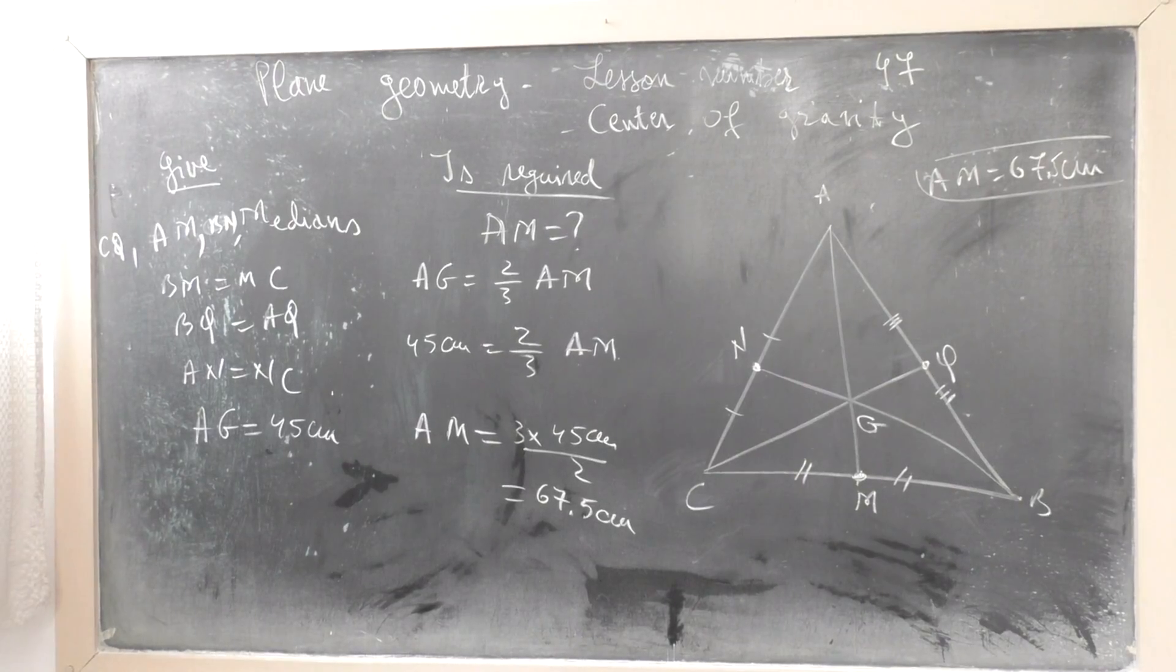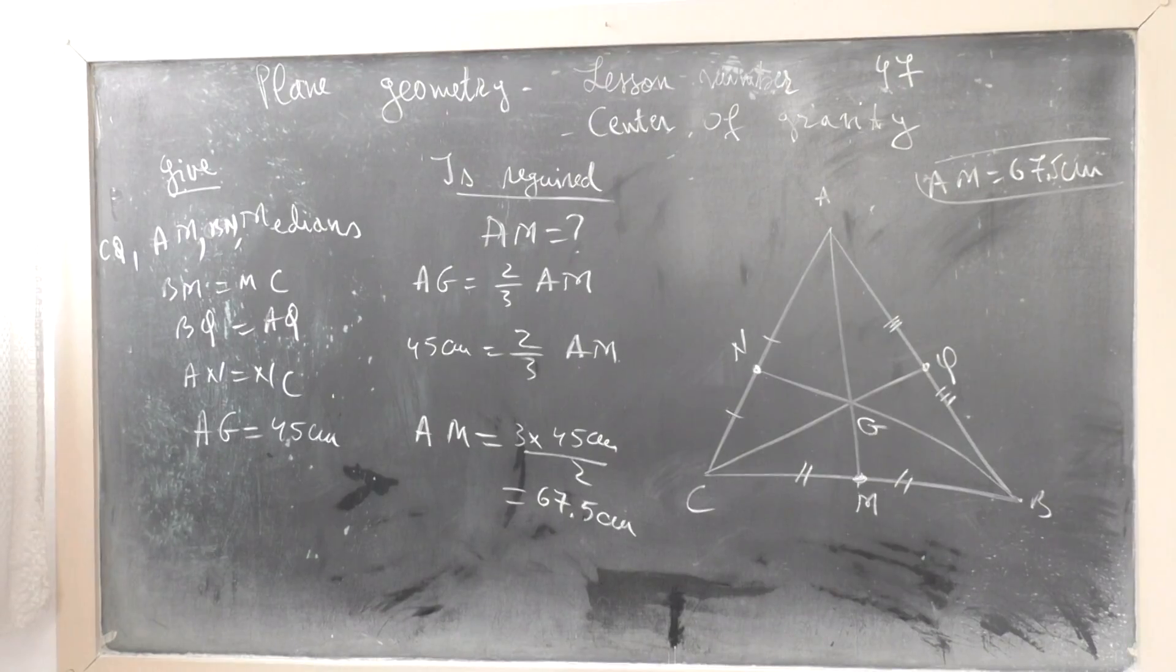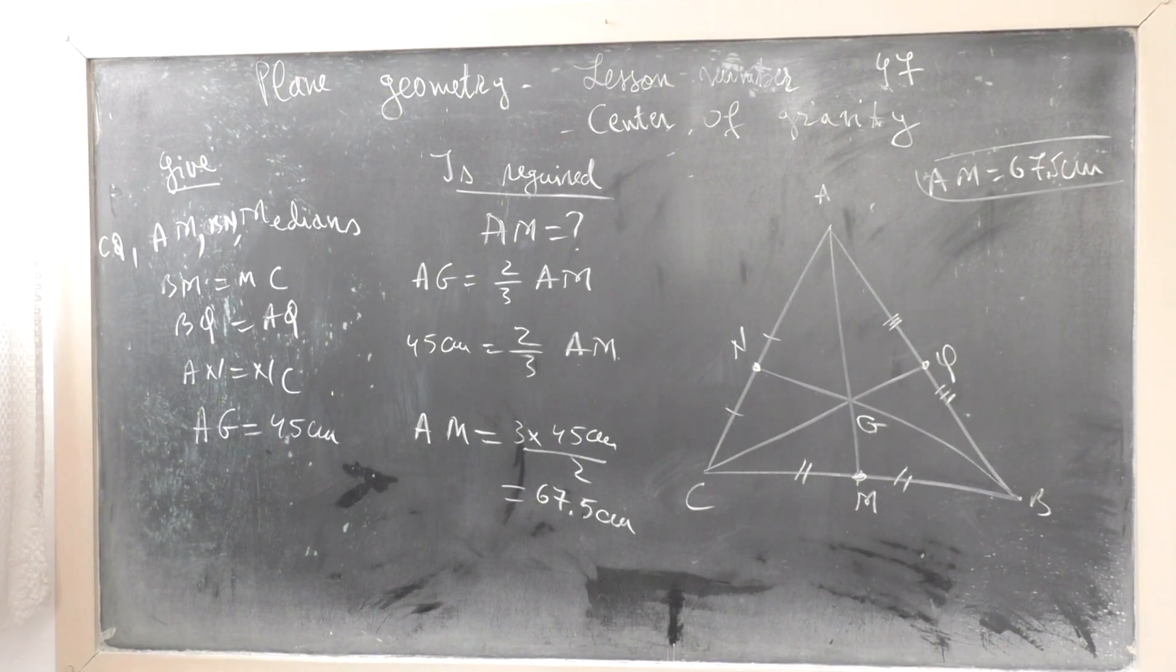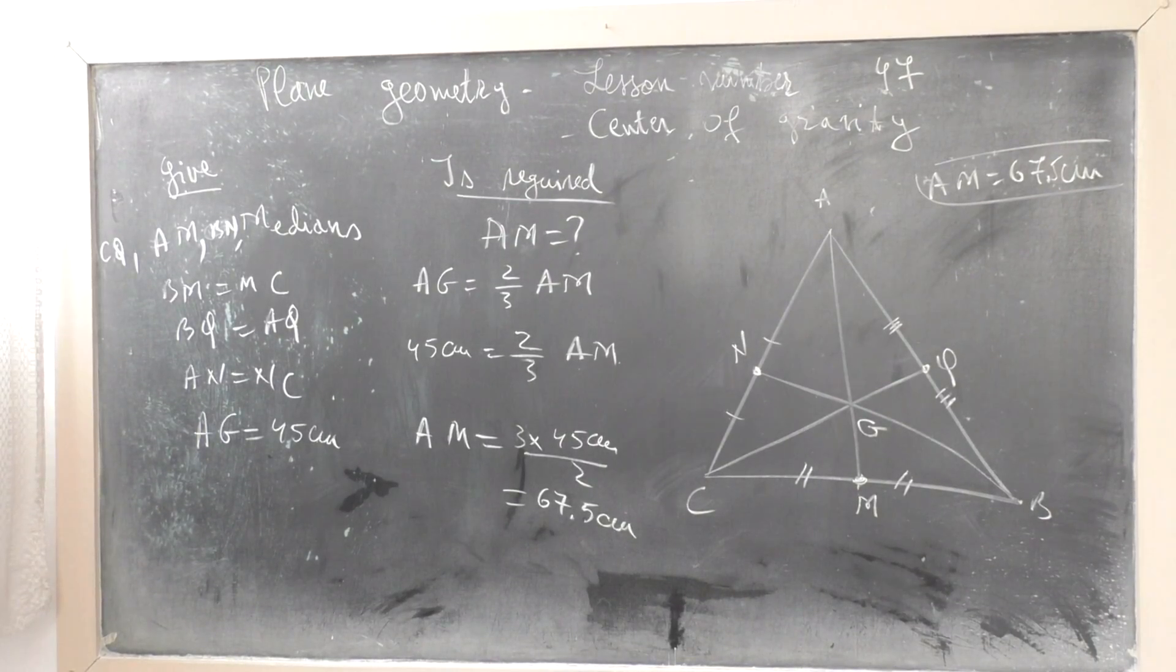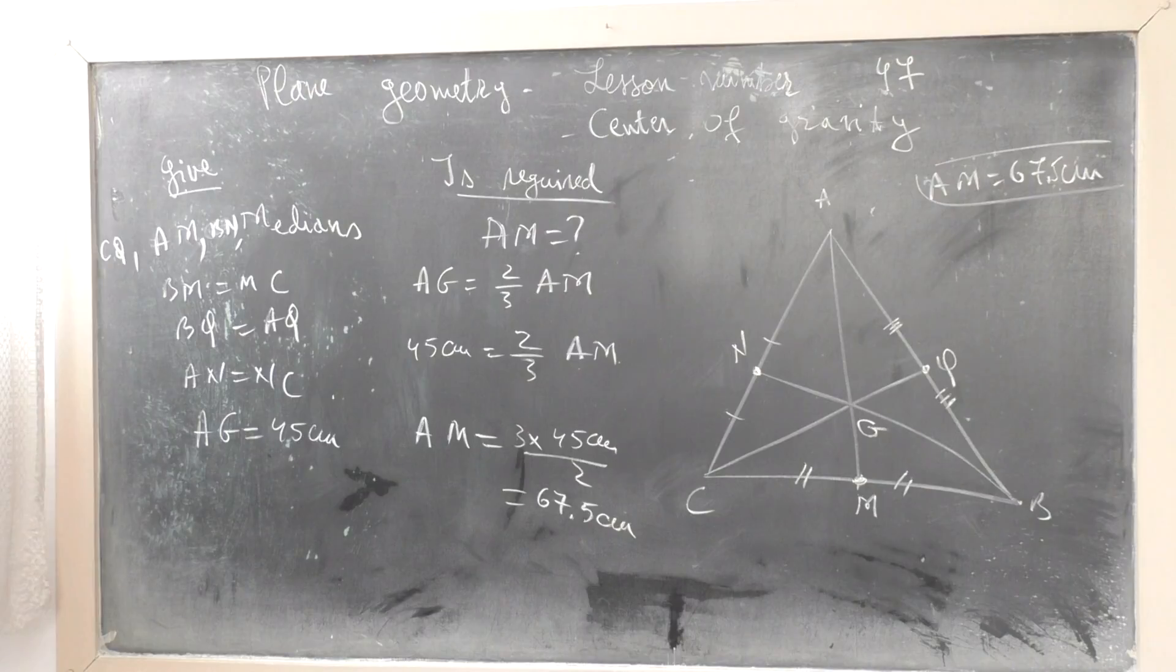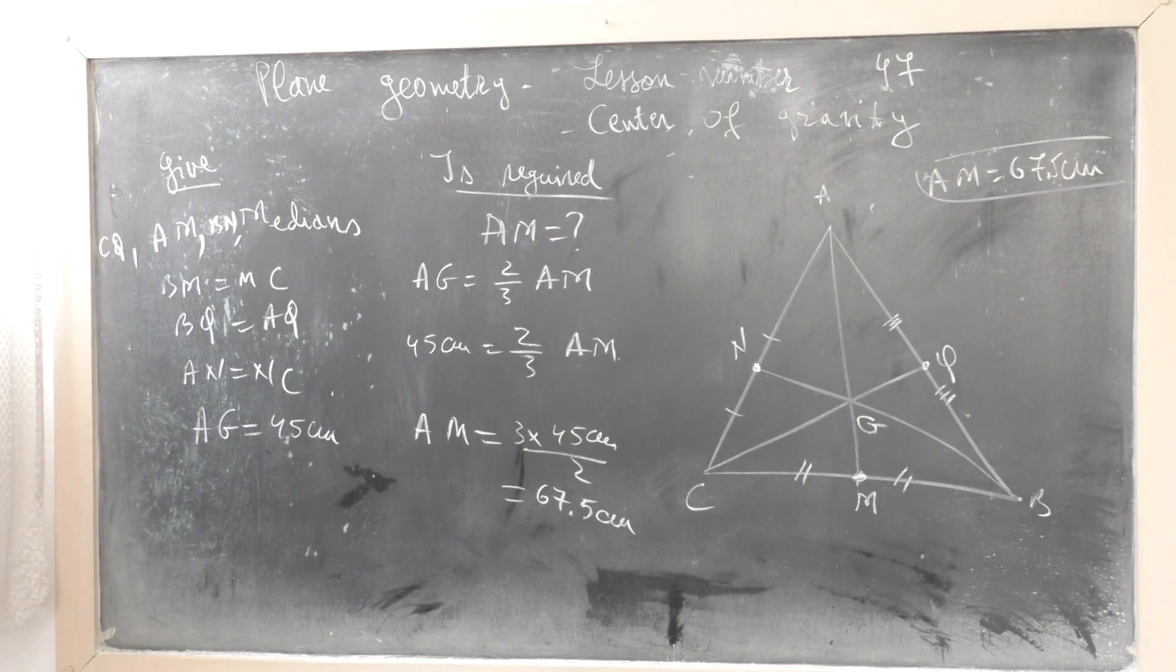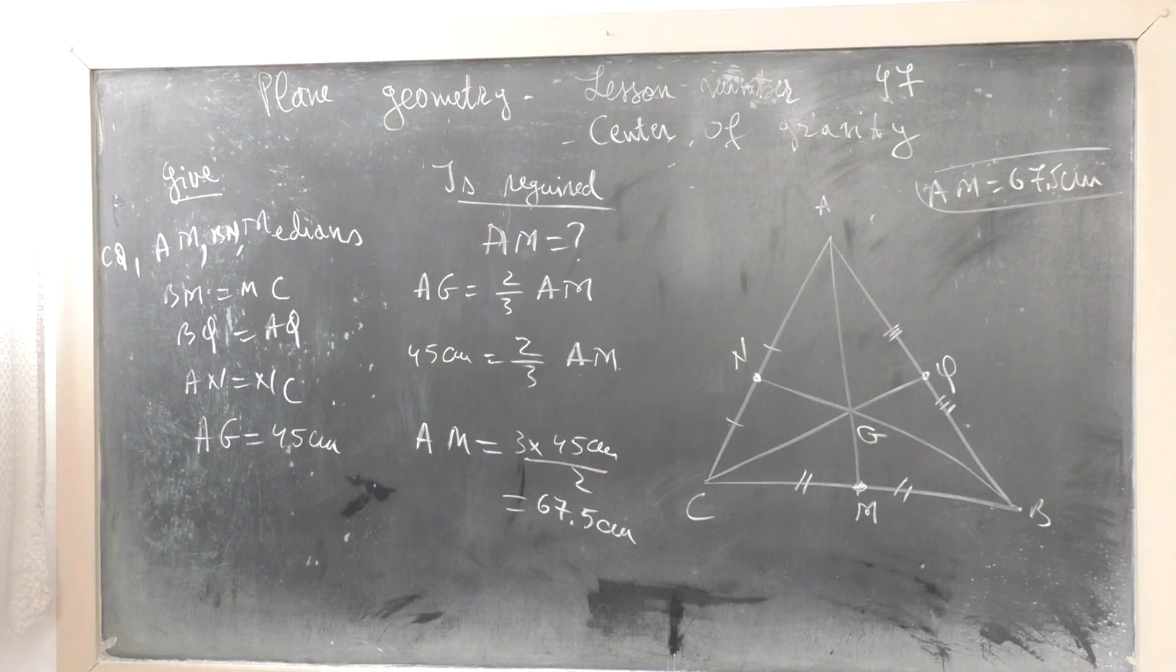General property: AG equals two-thirds AM, and GM equals one-third AM. The center of gravity in a triangle is the point where all medians intersect.